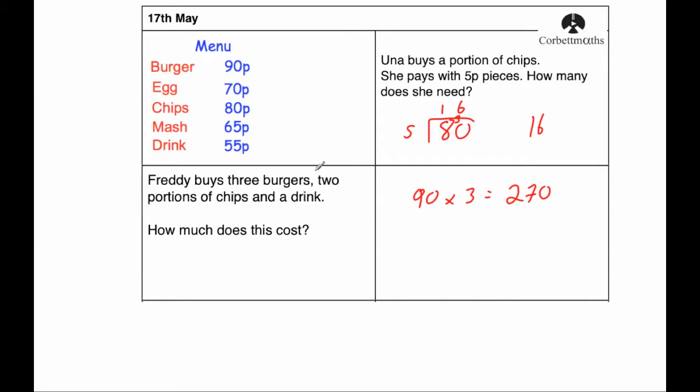He buys 2 portions of chips. Chips are 80 pence, so we're going to do 80 multiplied by 2, and that's 8 times 2 is 16, adding on the 0, 160. Finally a drink is 55 pence. Let's add those up. 0 plus 0 plus 5 is 5, 7 plus 6 is 13, plus the 5 would be 18, put the 8 down, carry the 1, and 2 plus 1 plus 1 is 4. So it costs £4.85.